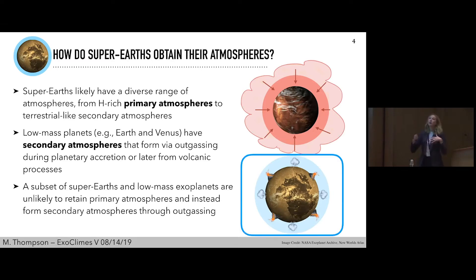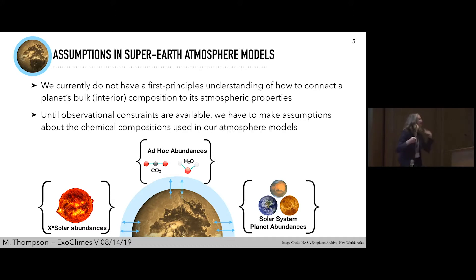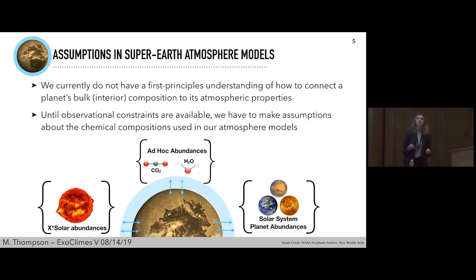It's been made very clear throughout this exoclimate conference that we're at a very exciting next phase in exoplanet science, where we're pushing to being able to characterize the physics and chemistry of lower mass super-earth atmospheres, and one day even pushing to rocky planet atmospheres. As Jonathan talked about, we currently don't have a real first-principles understanding of how to connect a planet's interior or its bulk composition to its atmospheric properties — and this is especially true for these lower mass planets.